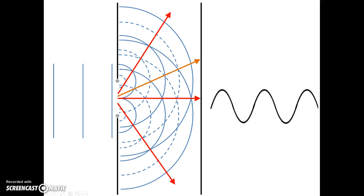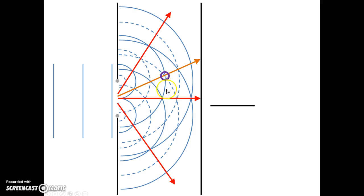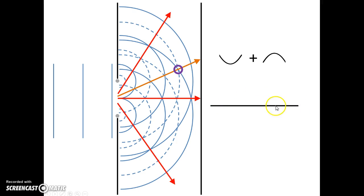Now, along this ray, something different is happening. At the first point, we have a crest — a solid line — overlapping with a dotted line, which means a trough, and they cancel out. At this point, we have a trough overlapping with a solid line, which represents a crest — and again, they cancel out. Right here, we have a crest overlapping with a dotted line, which represents a trough, and so those cancel. A trough overlapping with a crest — a dotted line meeting a solid line — and they cancel out. So everywhere along that orange line, we have perfect destructive interference, and there is no wave there. There's another spot where this happens, along this ray.